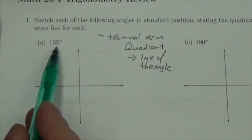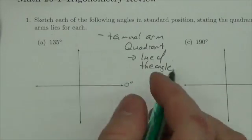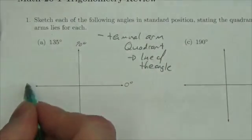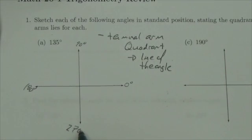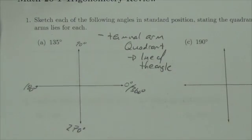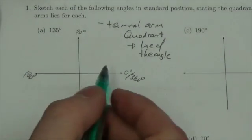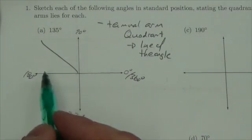So for example, 135°, bearing in mind that this is 0° and we're rotating counterclockwise here, that's 90°, 180°, 270°, up to 360° again. So 135° is going to put us in quadrant 2.